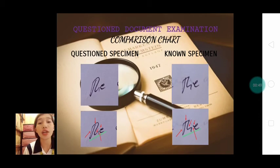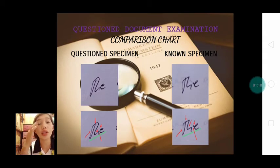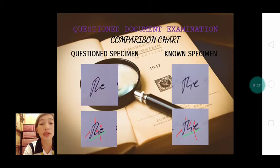This is the first specimen that I will be going to analyze and compare — the word 'the' with the letters T, H, and E in both specimens. Based on my observation, the form, which is the design and shape of the letters used in the word 'the' in both specimens, is somewhat similar and identical in its characteristics and features. The initial stroke or beginning stroke of the capital letter T starts at the top portion of the vertical line in both specimens.